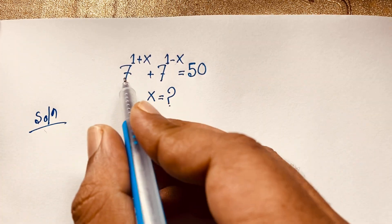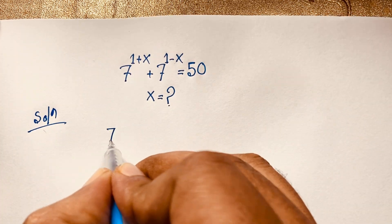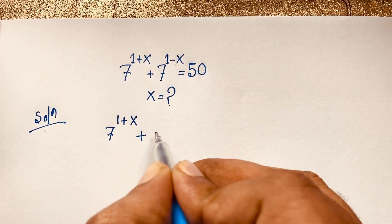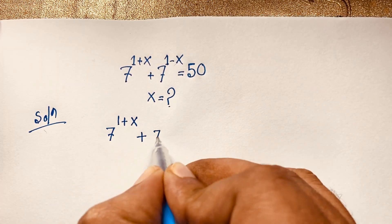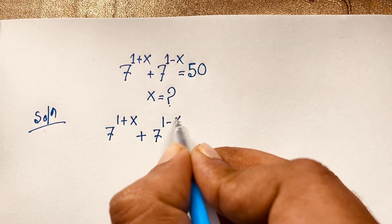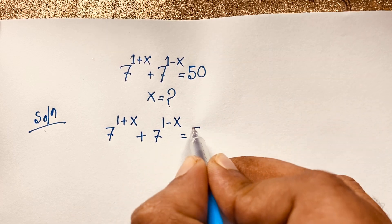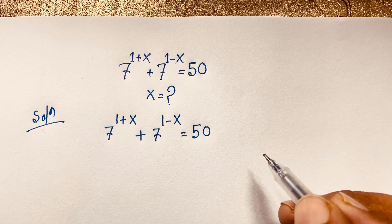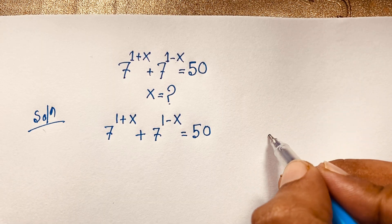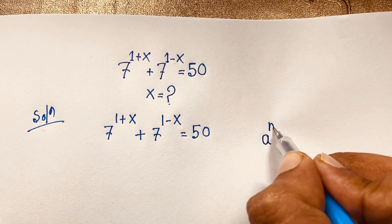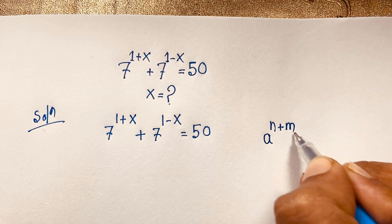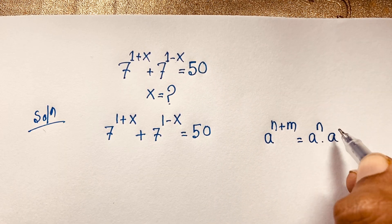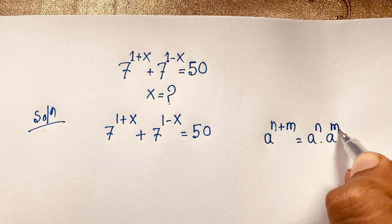Our question is 7 to the power (1 plus x) plus 7 to the power (1 minus x) is equal to 50. Now, we can use the exponential formula: a to the power (n plus m) equals a to the power n times a to the power m.